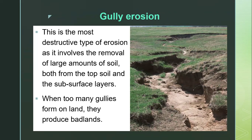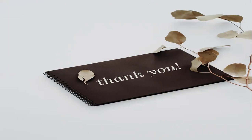When too many gullies form on land, they produce a badland — whereby the land is bare and empty, with no vegetation covering it, and completely unstructured since it has been destroyed by intensive surface water runoff. Thank you for listening. We've discussed all the main types of water erosion, finishing up the remaining two from our previous video: gully erosion and rill erosion.